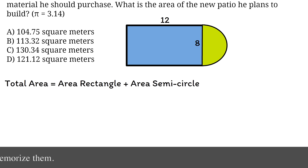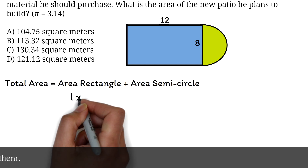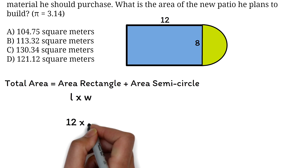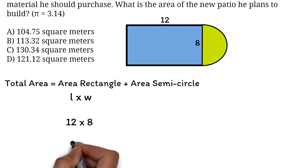Let's start by finding the area of the rectangle. The area of a rectangle is length times width, so we have 12 times 8, which gives us 96 square meters.